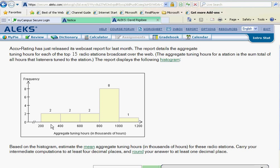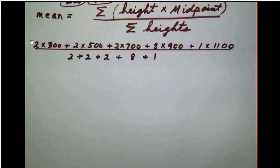So what we'll do then is to take the height of the first bar, 2 times its midpoint of 300, and then add the height of this bar, which would be 2 times its midpoint, which would be 500. And I've done that already over in this step. So 2 times 300 plus 2 times 500 plus 2 times 700 plus 8 times 900 plus 1 times 1100.